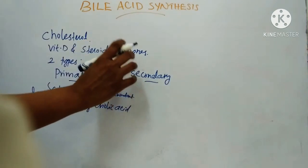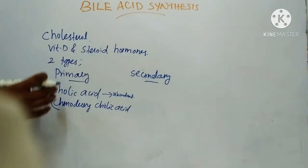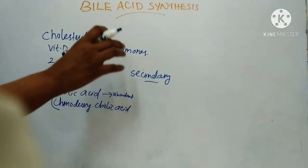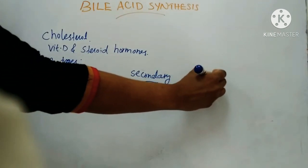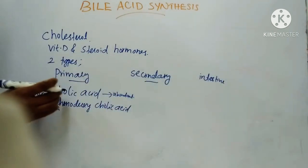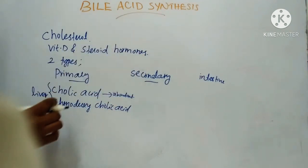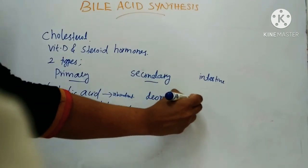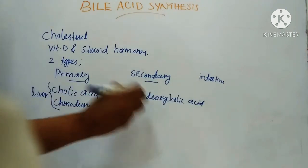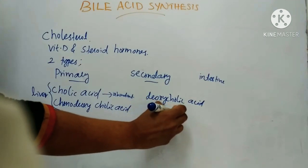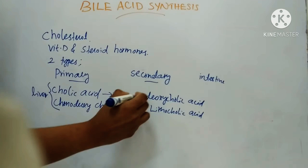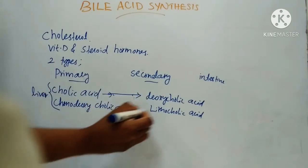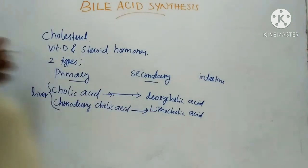Coming to the secondary bile acids, these are produced in the intestine from the primary bile acids. Secondary bile acids are of two types: deoxycholic acid and lithocholic acid. Deoxycholic acid is synthesized from cholic acid, and lithocholic acid is synthesized from chenodeoxycholic acid.